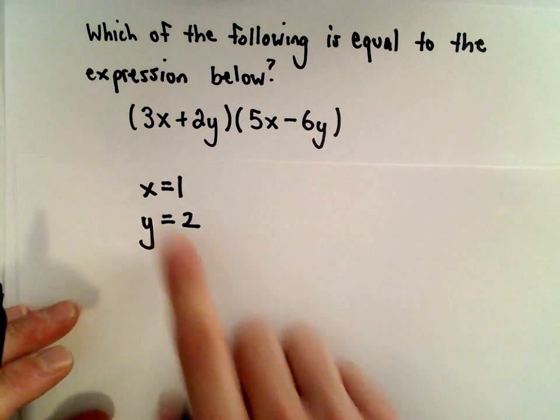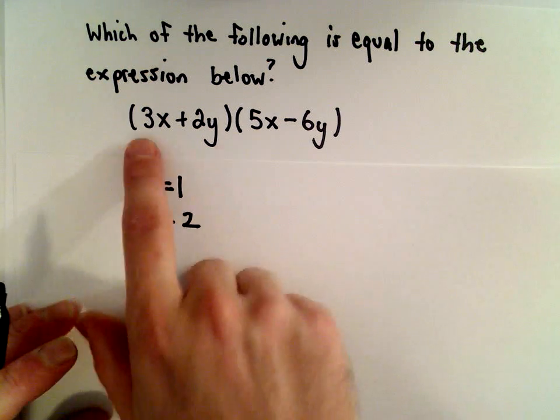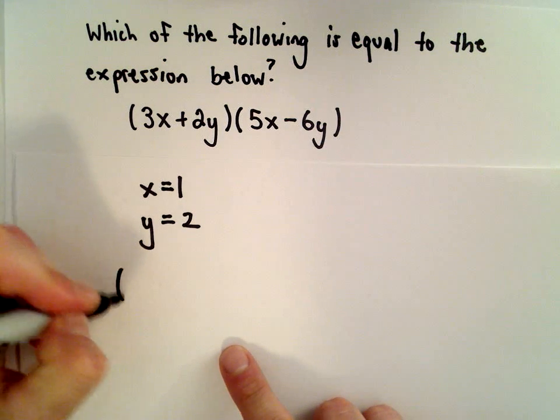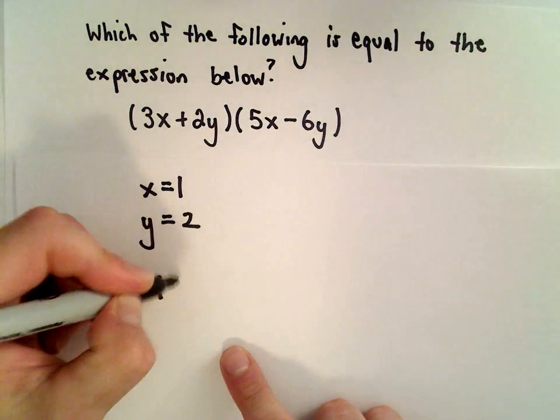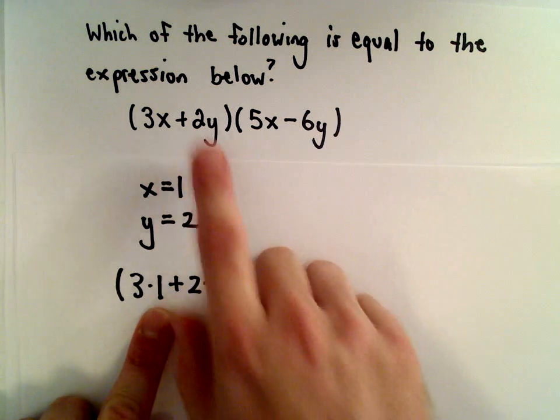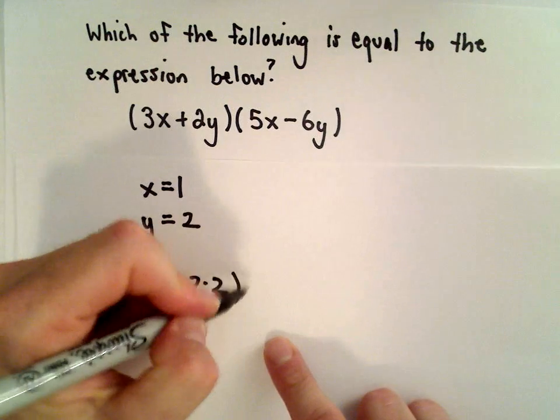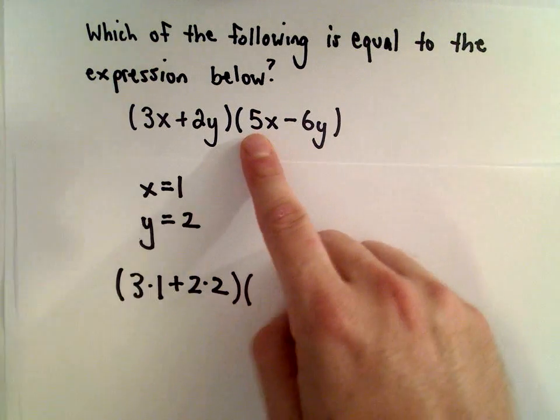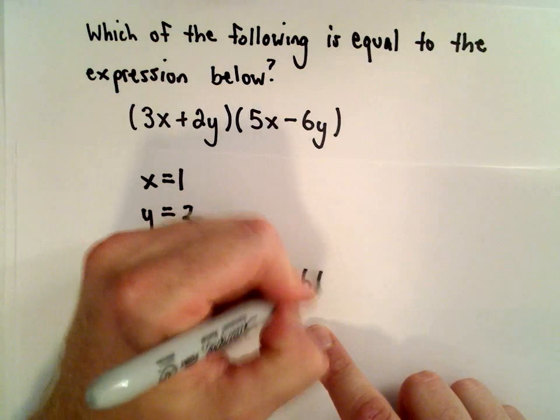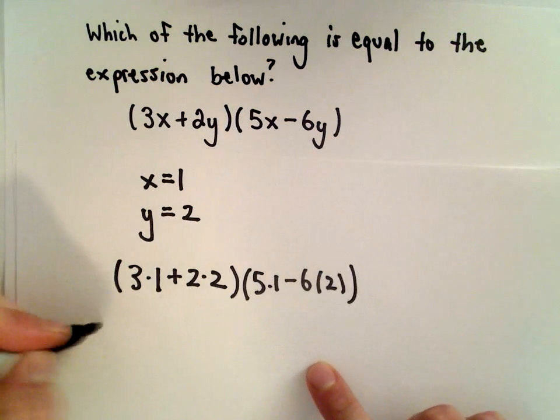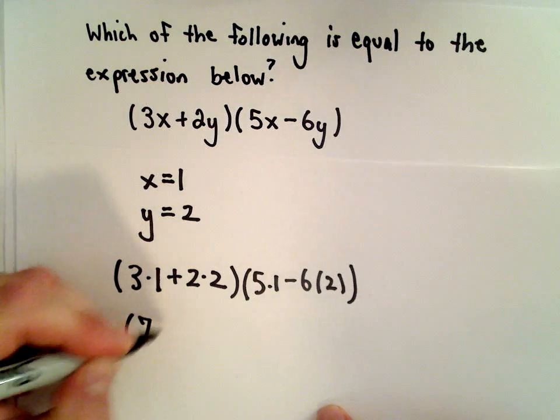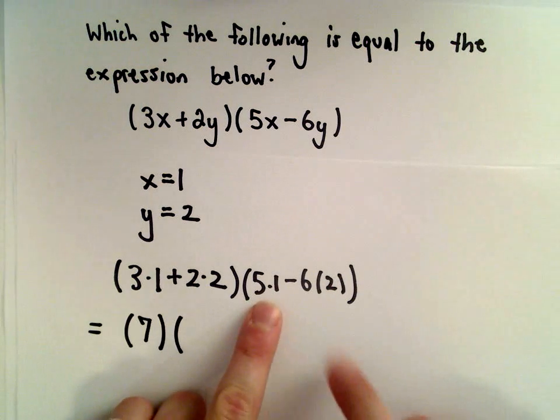What I'm going to do is pick values x equals 1 and y equals 2, substitute them into this expression and see what I get. So I have 3 times 1 plus 2 times 2, substituting x equals 1 and y equals 2 into both parentheses.